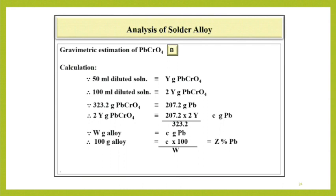W gram alloy corresponds to C gram of Pb. Therefore, 100 gram of alloy corresponds to C into 100 divided by W that is Z percent of Pb.